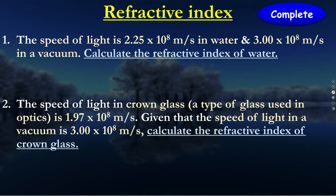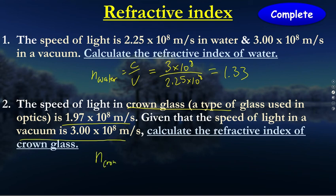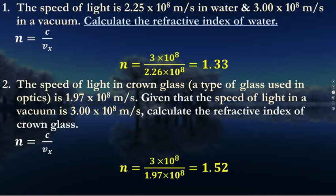Let's look at these calculations to measure the refractive index. For water: 3×10⁸ divided by 2.25×10⁸ gives a refractive index of 1.33. For crown glass: the speed of light in a vacuum divided by 1.798×10⁸ gives a refractive index of approximately 1.25.